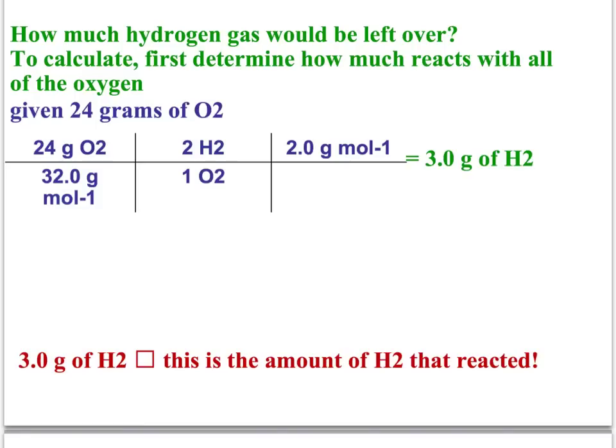So to do this, we start with the limiting reactant, which is 24 grams of oxygen. I'll write this here, so it's 24 grams of O2. And we want to convert that. We've already got the balanced equation, so the next step is to change grams, our given, to moles. We'll do that. We'll say there's 32 grams of O2 and one mole of O2.